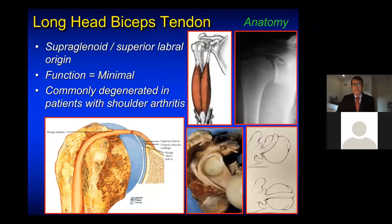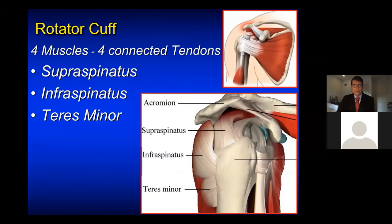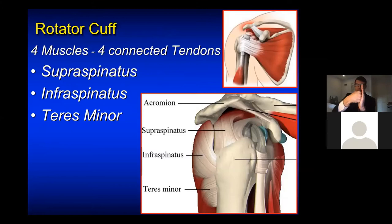The biceps tendon is frequently involved if you have rotator cuff disease or shoulder arthritis. The biceps muscle is named because it has two heads — one that travels outside of the shoulder, and one that travels through the shoulder and can frequently be involved with inflammatory disease such as rotator cuff pathology and arthritis. The rotator cuff itself is a combination of four tendons that are connected, forming a cuff of tissue on the top of the humerus, which helps to stabilize it by compressing it into the socket when the deltoid fires — three muscles with a common tendon on the top and back, and one in the front.